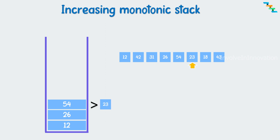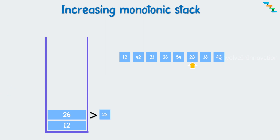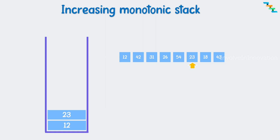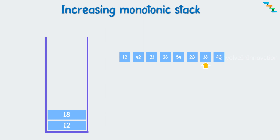Check if the next element 23 is greater than the top of the stack 54. No, so pop the top. Next check: 23 is less than the current top 26, so remove 26. Then check if 23 is less than the top 12. Yes, so add 23 on top of 12. Check if the next element 18 is less than the top 23. Yes, so pop 23. Check if 18 is greater than the top 12. Yes, so add 18 on top of 12. Check if the next element 43 is greater than the top 18. Yes, so add 43 on top of 18. This is the increasing monotonic stack.